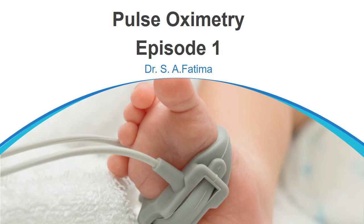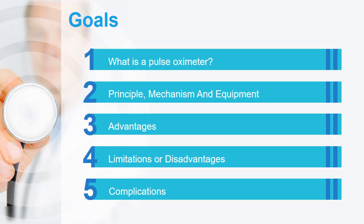Assalamu alaikum, this is Dr. Fatima. Today, as mentioned in the previous video on introduction to monitoring during anesthesia, we are going to discuss pulse oximetry, which is the component under respiratory system monitoring. Today we will discuss what a pulse oximeter is, what principle it follows, the mechanism of action, equipment used, advantages, disadvantages, and complications. I have divided pulse oximetry into two episodes — this is the first episode.